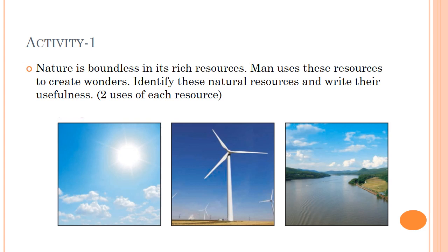These wind turbines convert kinetic energy into electricity. Winds also help boats to sail through water. The third picture is of water. Water is used by all and we cannot live without it. We use it domestically for drinking, cooking food, washing dishes, brushing teeth, and so on. It is a main component in agriculture and is used in industries as well. Today in your homework you have to name these resources and write any two uses of each.